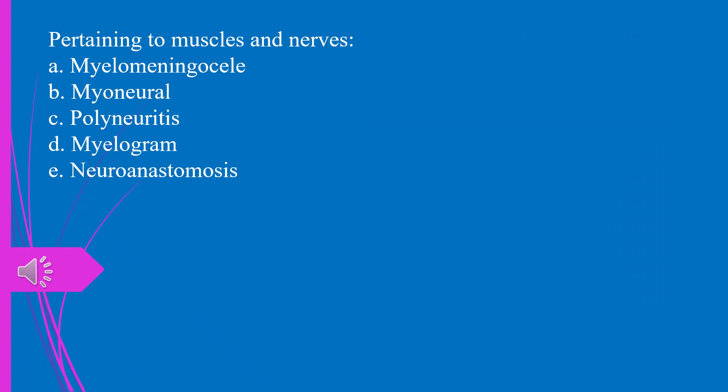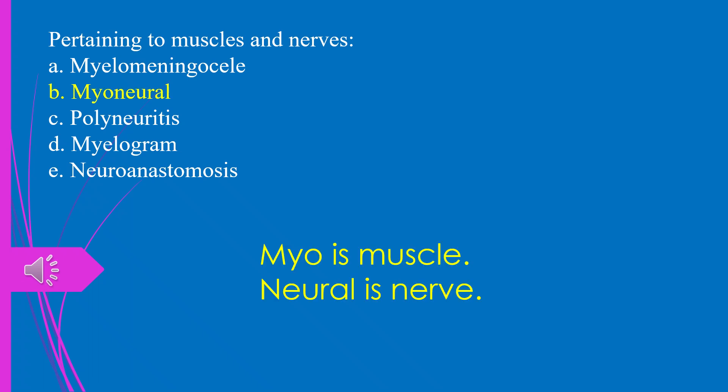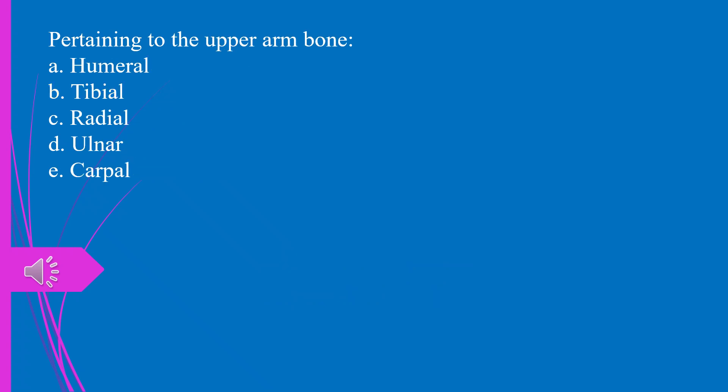Question 17. Pertaining to muscles and nerves: a) myelomeningocele, b) myoneural, c) polyneuritis, d) myelogram, e) neuronastomosis. The answer is b, myoneural. Myo is muscle, neural is nerve.